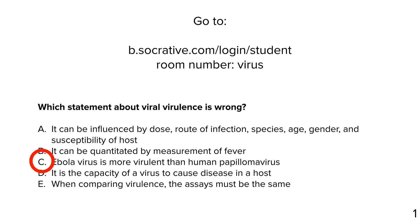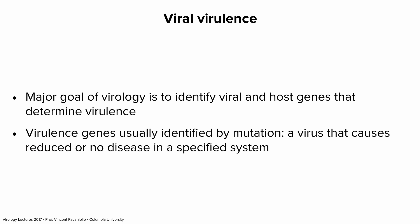One of the major goals of people who study pathogenesis is to identify viral and host genes that control virulence — and notice I say viral and host, because both contribute. If you think only viral genes are involved, you would be wrong, because the host makes a major contribution. The way we identify viral virulence genes is to make mutations in the virus, then infect an animal model and see if we can identify mutations that reduce or abolish virulence. We can also make mutations in hosts — CRISPR is a good way to do it, and even before CRISPR there were other ways to delete or reduce gene expression in animals or cells.